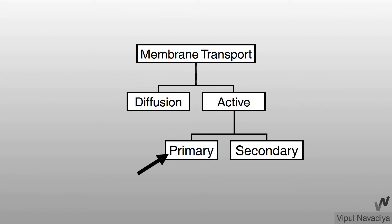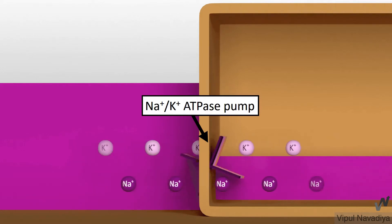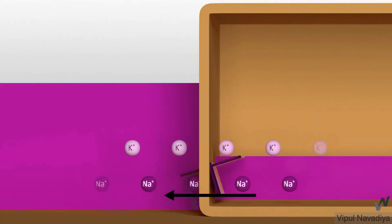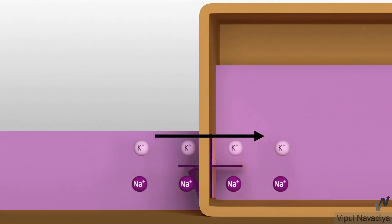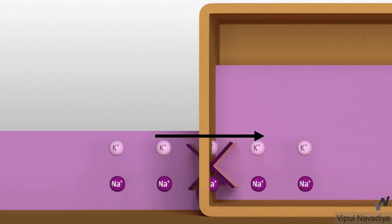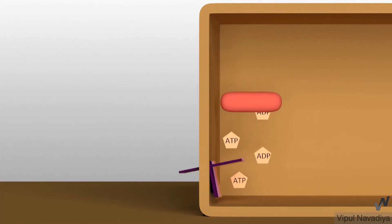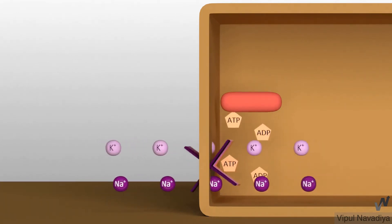In primary active transport, energy is obtained directly from ATP. Let's take example of sodium-potassium-ATPase pump. It moves sodium ions from inside to outside against its electrochemical gradient. And, potassium from outside to inside against its electrochemical gradient. I prefer to demonstrate the activity of this pump in this way. This is mitochondria where ATP is produced. The build of ATP energizes the pump. In this process, ATP is converted to ADP and energy that is released is transferred to the pump. Pump uses this energy to move sodium from inside to outside and potassium from outside to inside.